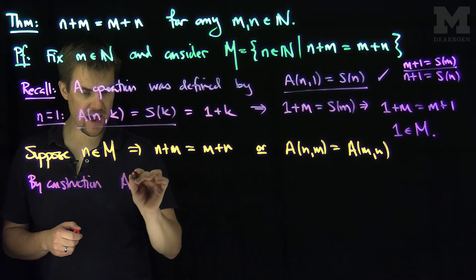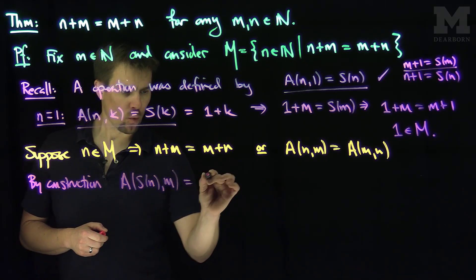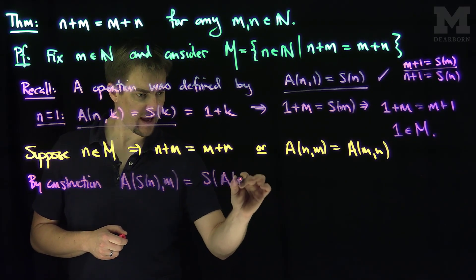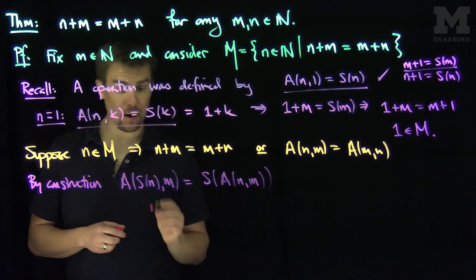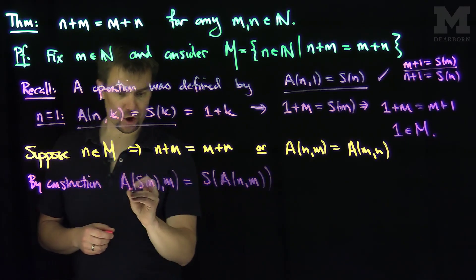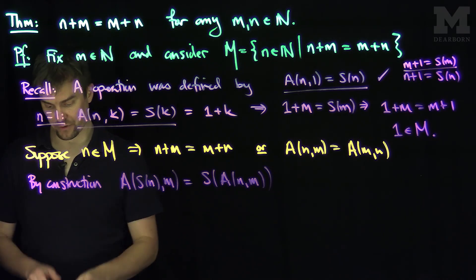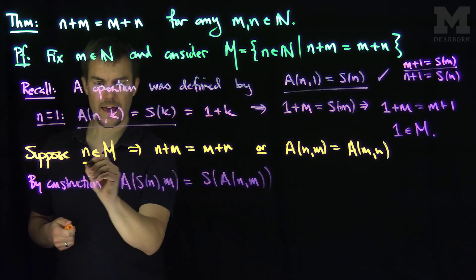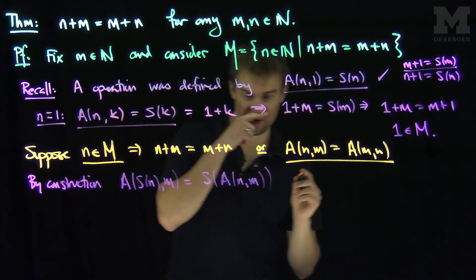We know that A of S(n), m was S of A(n,m). That was how we defined addition on the successor by our construction of addition. So now, we know that n is in M, so this relationship is true.